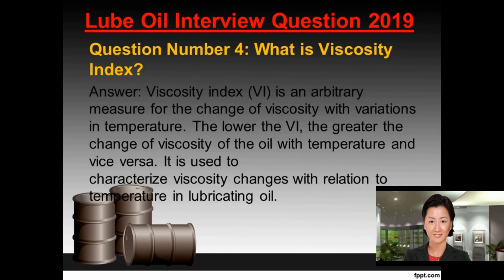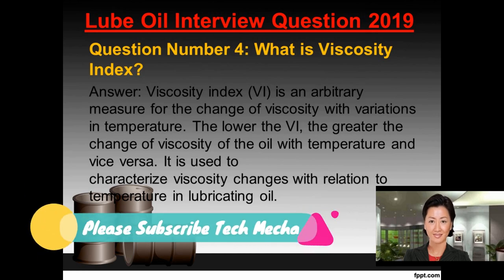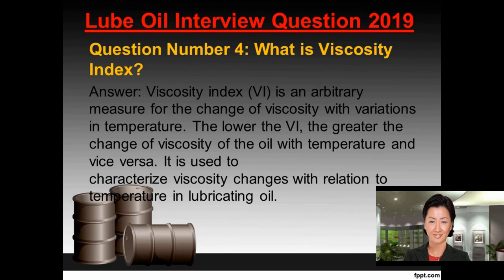Question number four: What is viscosity index? Answer. Viscosity index, VI, is an arbitrary measure for the change of viscosity with variations in temperature. The lower the VI, the greater the change of viscosity of the oil with temperature, and vice versa. It is used to characterize viscosity changes with relation to temperature in lubricating oil.